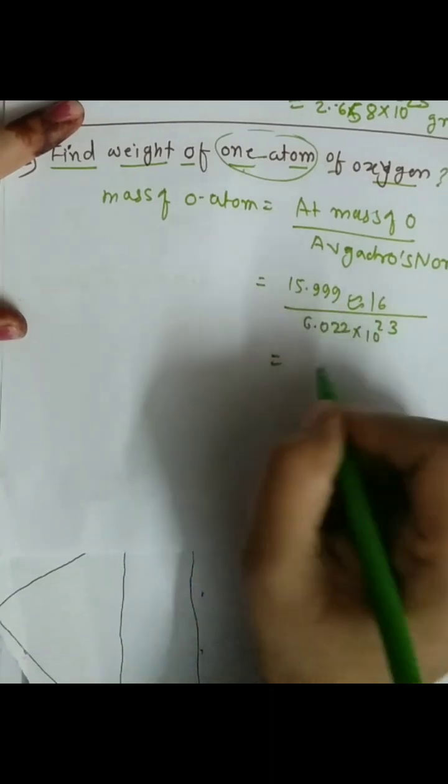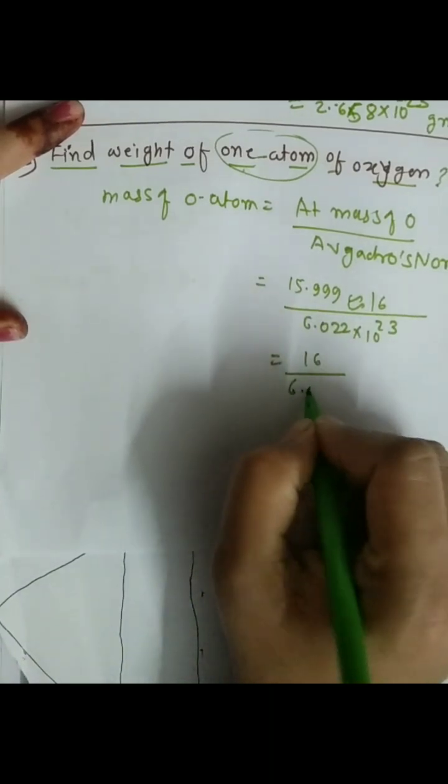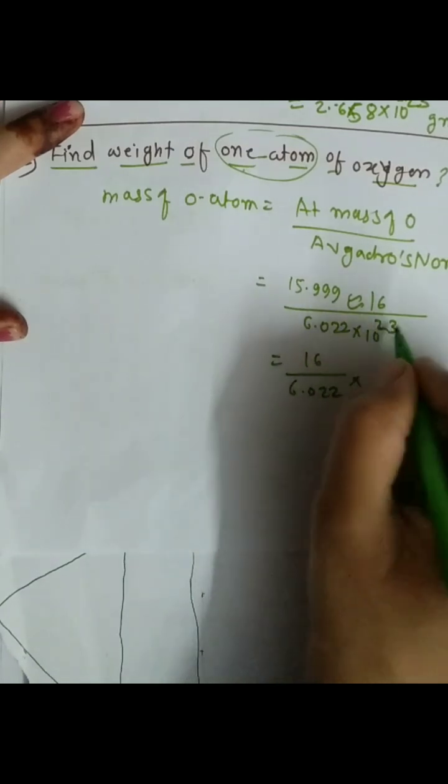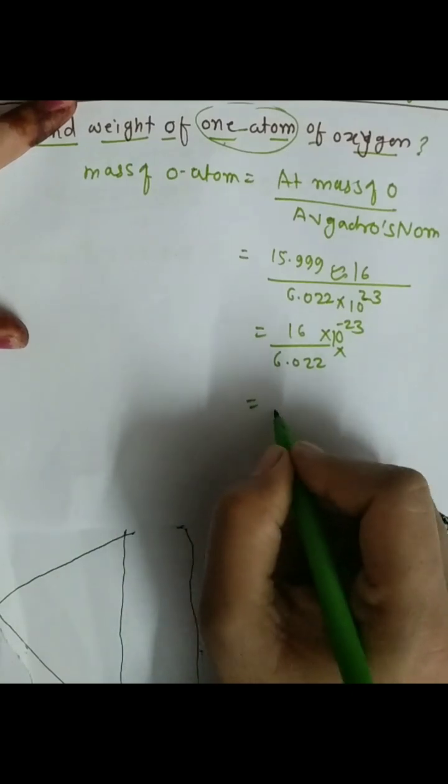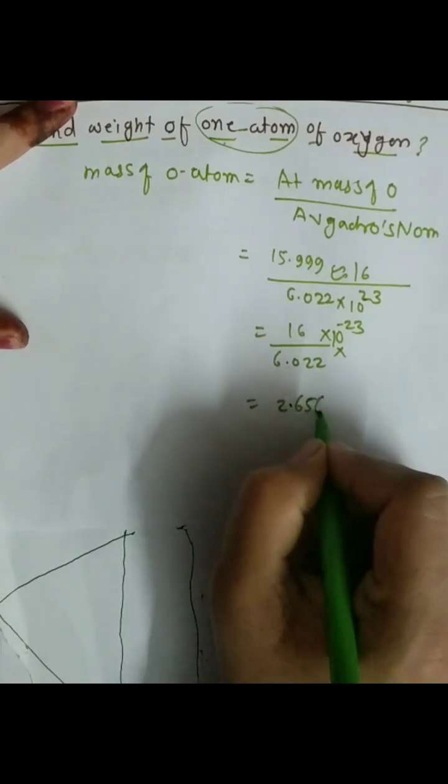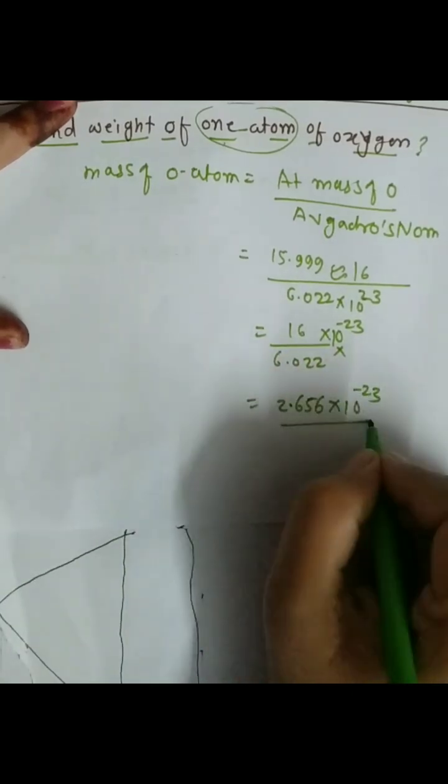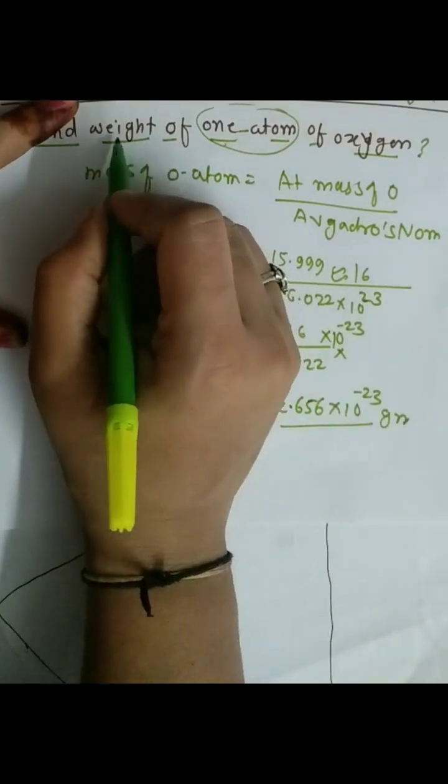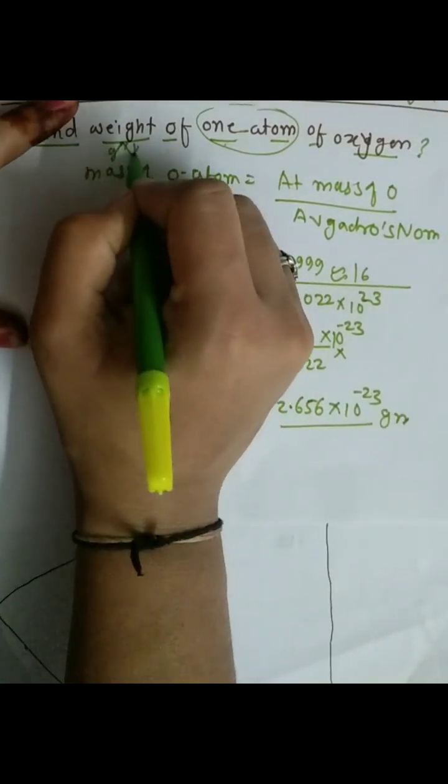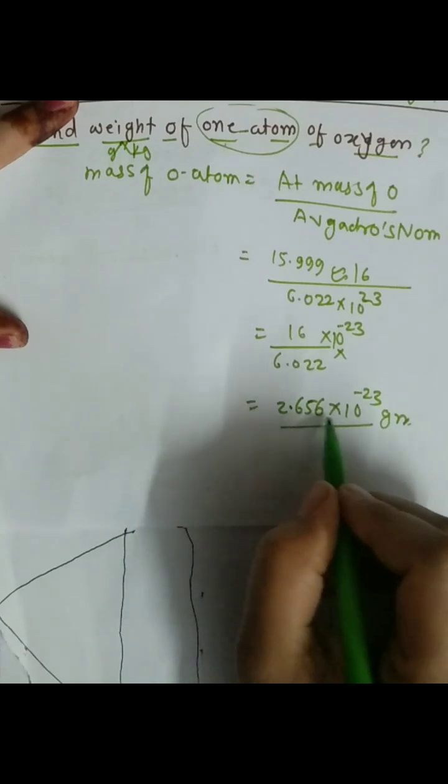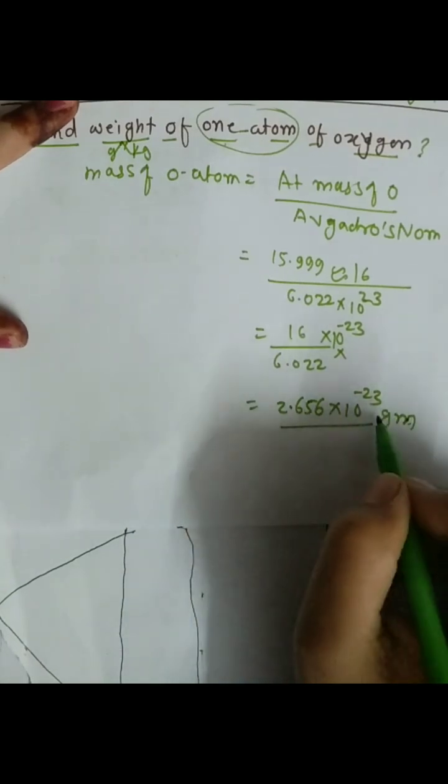After calculation, 16 divided by 6.022 × 10²³, it will be 10⁻²³. After calculating we get 2.656 × 10⁻²³ in grams. We know the weight is represented in gram or kilogram, so here the answer is 2.656 × 10⁻²³ grams.